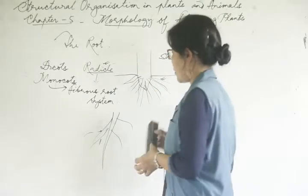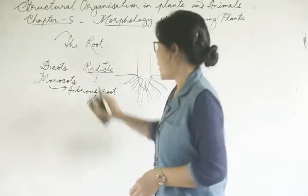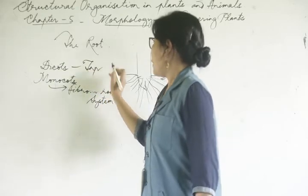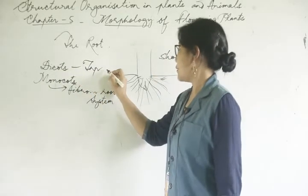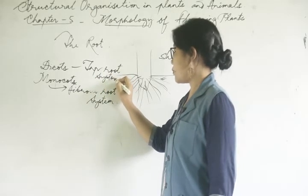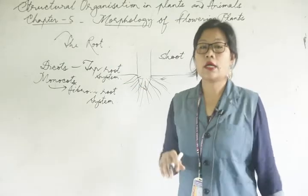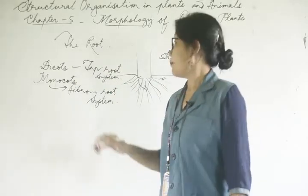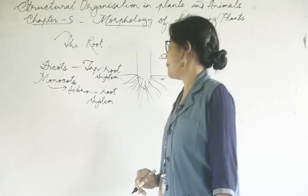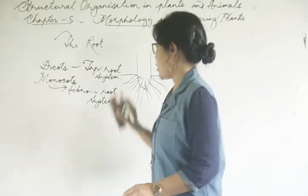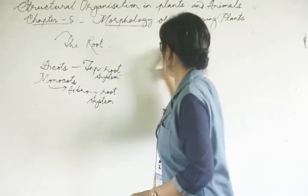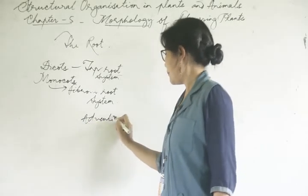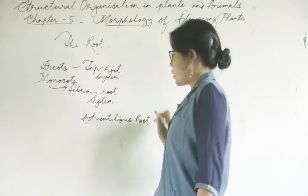This system of roots is called the fibrous root system. The type of root system found in dicot plants is the taproot system. We call it the taproot system.